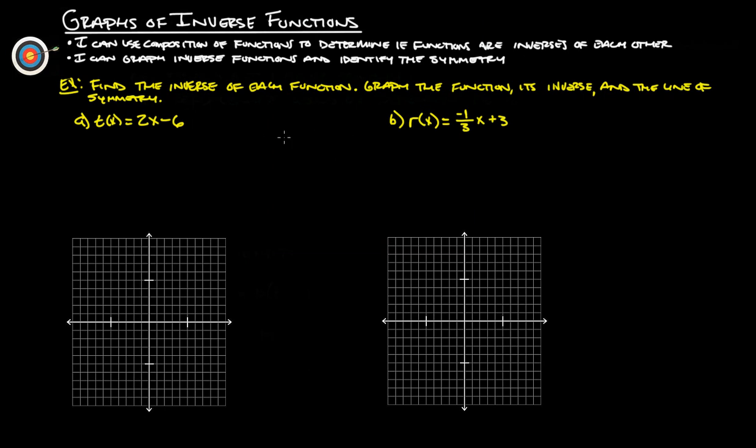Anyway, find the inverse of each function, graph the function, its inverse, and the line of symmetry. So let's just do one thing at a time. Let's find the inverse. So remember, the inverse is where we switch the x and the y. So remember, this over here is the y. So now that turns into x equals 2y minus 6.